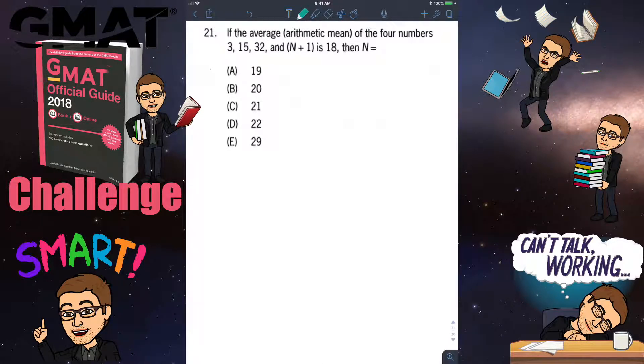GMAT challenge number 21. If the average arithmetic mean of the four numbers 3, 15, 32, and n plus 1 is 18, then n is? Using the definition of arithmetic mean, you add all the numbers divided by the number of numbers to get the average.